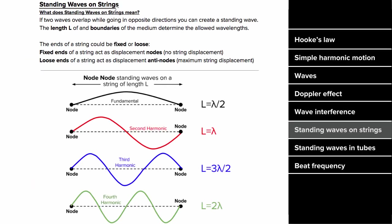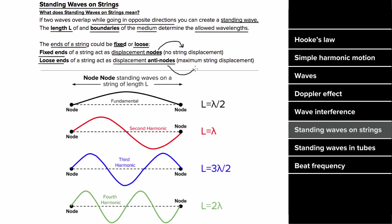For standing waves on strings, you need waves overlapping going in opposite directions. Only certain allowed wavelengths will create a standing wave, determined by the length of the medium and its boundary conditions. The ends of a string can be fixed or loose. A fixed end is a displacement node — a point with no displacement. A loose end acts as a displacement antinode — a point with maximum displacement.